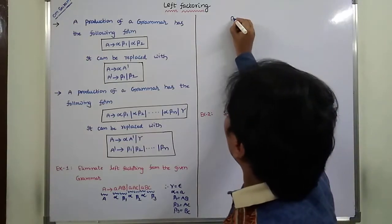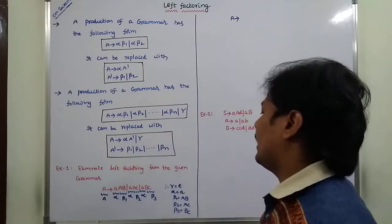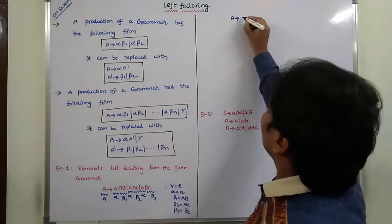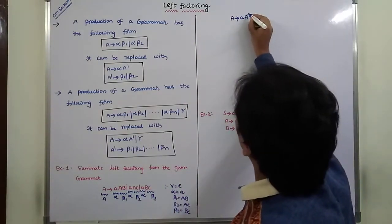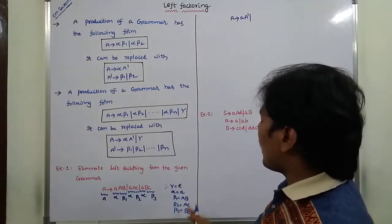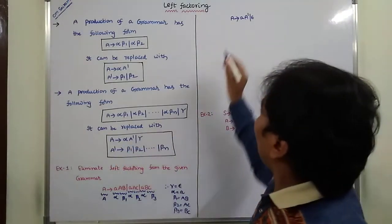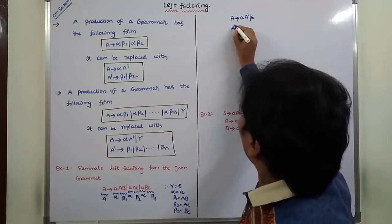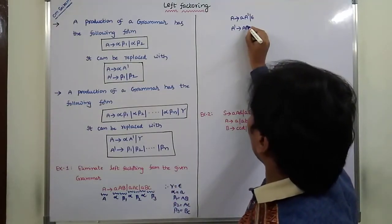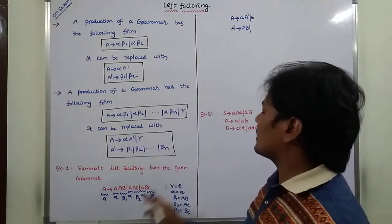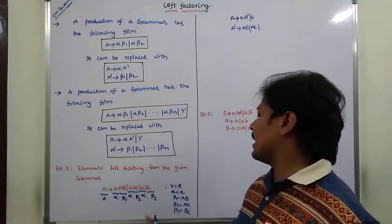The first new production is: A derives alpha A-dash, where alpha is small 'a' and A-dash derives beta1 | beta2 | beta3 | gamma. Gamma is epsilon. The second production is: A-dash derives AB | AC | BC.